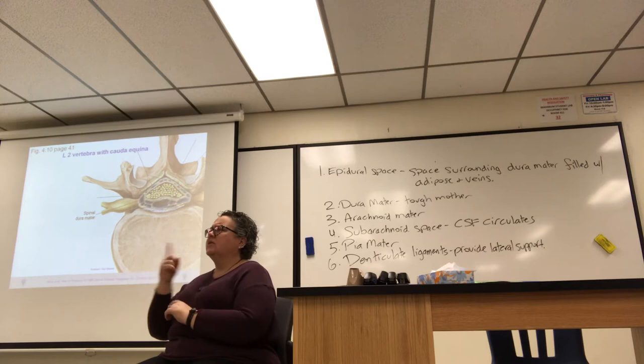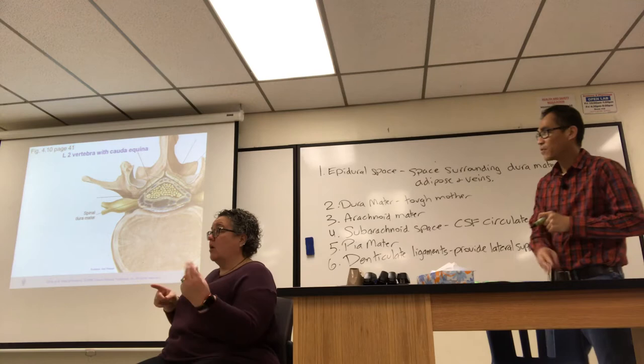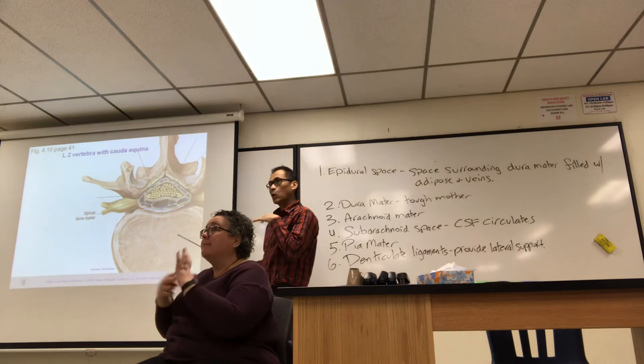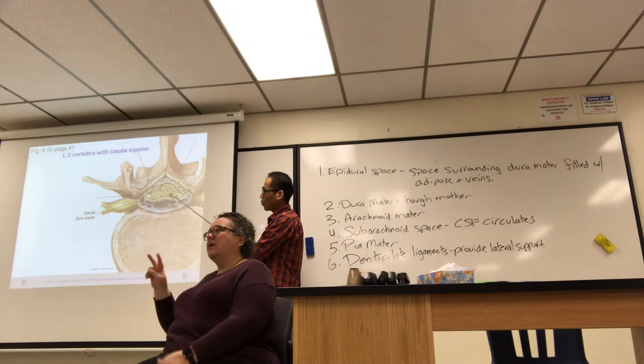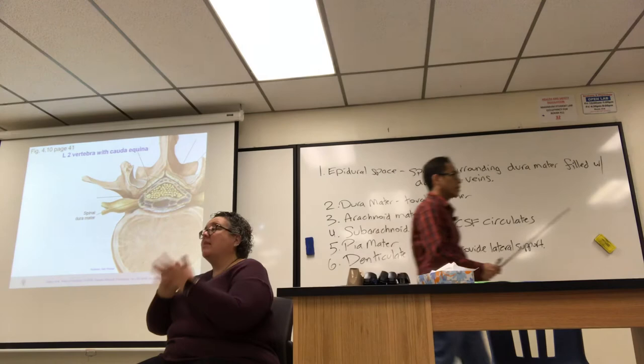Looking at an image at L2: there is no spinal cord visible — what you see are cut spinal nerves forming the cauda equina. Below the level of L1-L2 there is no spinal cord. Inferior to the spinal cord, below that level, is only cauda equina.